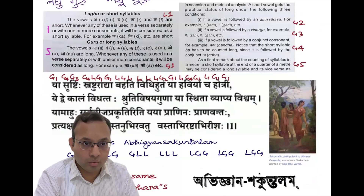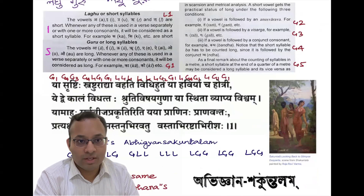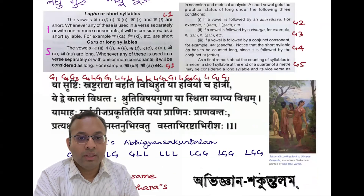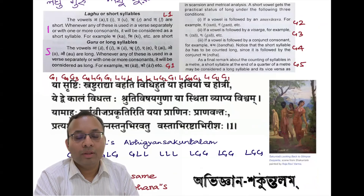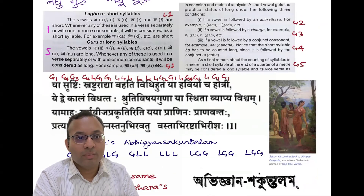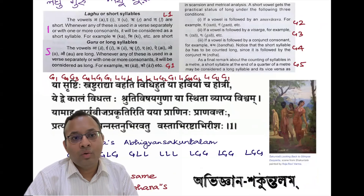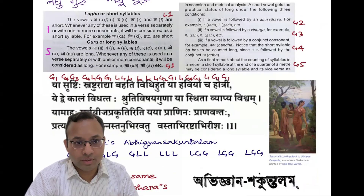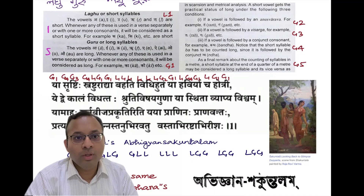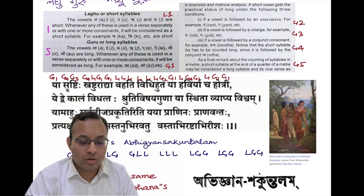Laghu are short vowels like A, I (hrasva), U, Ri, Li. For example, Ka or Ki — these are short vowels. Laghu Akshars are either used separately as a vowel (svara) or with one or more consonants (vyanjana varna). So Ka, Ki (hrasva I), or Ku (hrasva U) — these are short syllables or Laghu Akshars.